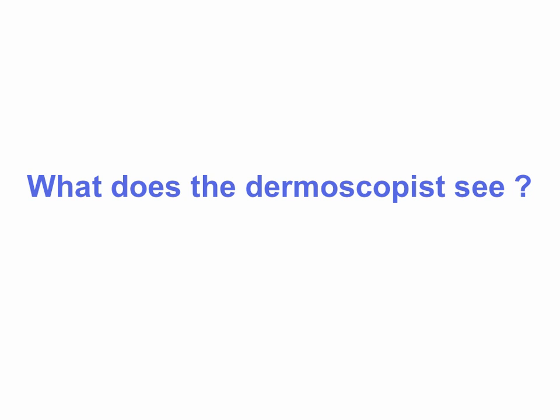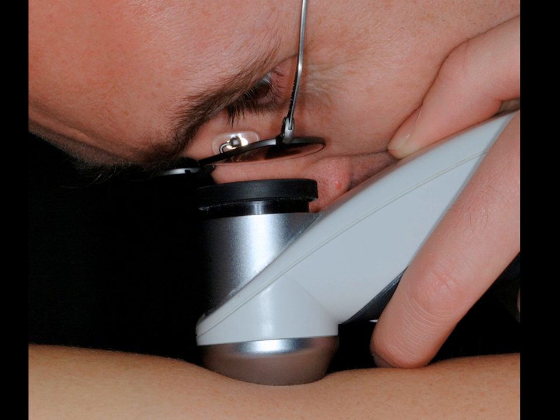The next question is: what does the dermoscopist see? Using dermoscopy, we use a handheld magnifying glass that allows us to look under the skin surface and to enhance the structures that we see, similar to histopathological examination. Using dermoscopy on the same lesion, we see many colors and structures — for example, we can see blue-white veil, irregular dots and globules, pseudopods — so many structures that have not been visible with the naked eye examination.